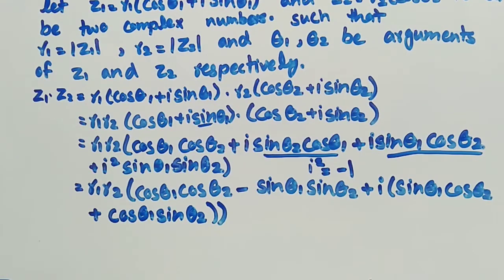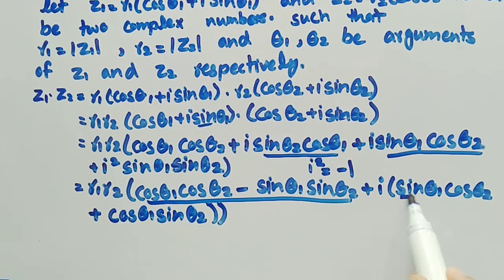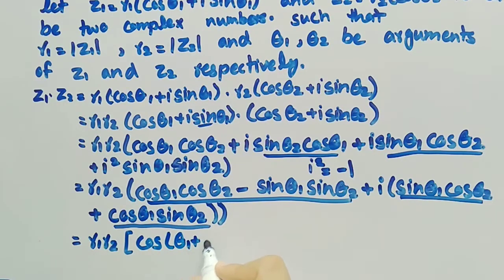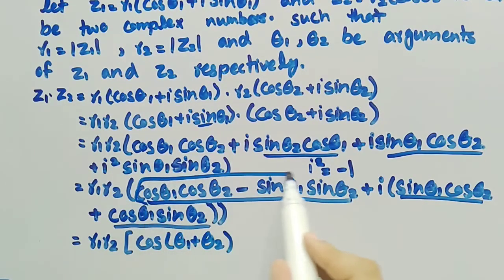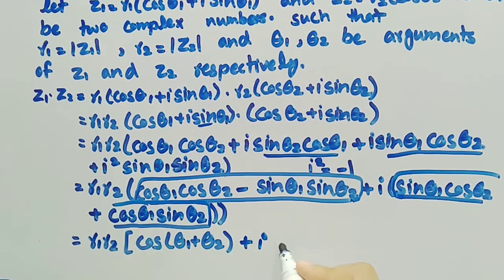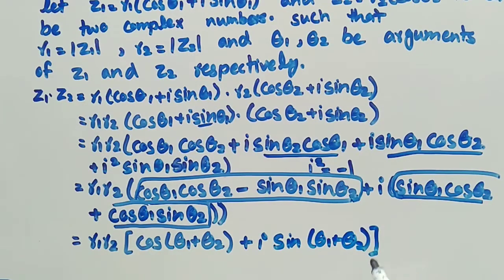By trigonometric addition formulas, we know that cos θ1·cos θ2 − sin θ1·sin θ2 = cos(θ1 + θ2) and sin θ1·cos θ2 + cos θ1·sin θ2 = sin(θ1 + θ2). So we can write z1·z2 = r1·r2[cos(θ1 + θ2) + i·sin(θ1 + θ2)].